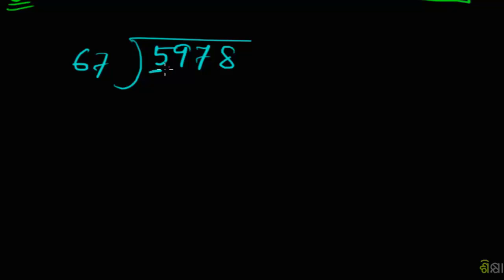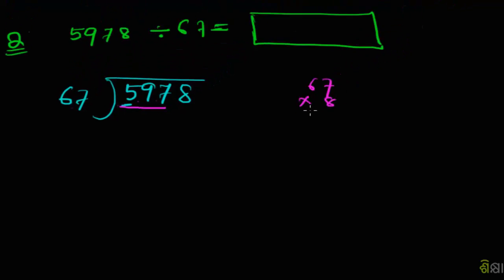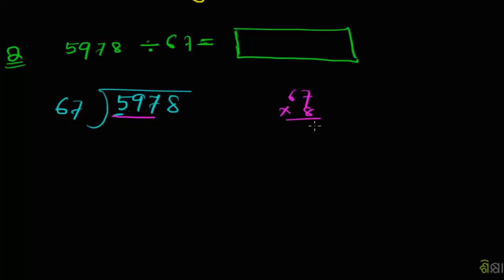If we want to write the model, we need to write the model. 597, so then we need to write the model. The model is 67 into 8. So we need to write the models as follows.